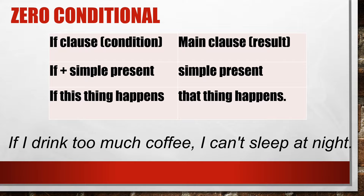Let's look at the structure. It has two clauses: the if clause, which is also called the conditional clause, and the main clause, which is also called the result clause. The tense in the if clause is simple present tense or the present indefinite tense. And the tense of the main clause or the result clause in the zero conditional is also simple present. So it means if this thing happens, that thing happens.